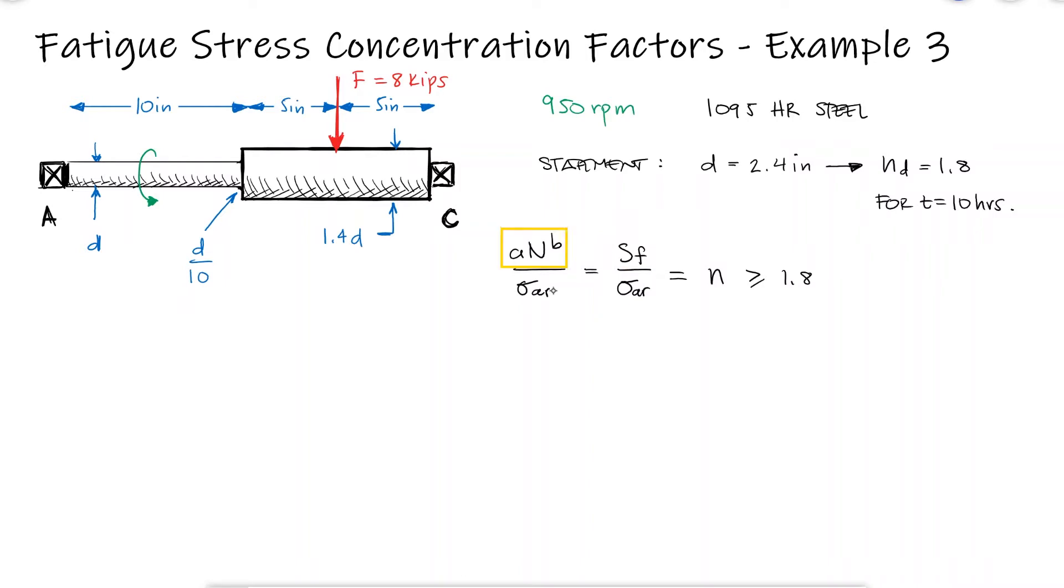This is of course assuming that the number of cycles is between 1000 and 1 million. Once again, knowing that finding the fatigue strength and the alternating stress are two independent procedures, we'll begin with the fatigue strength first.